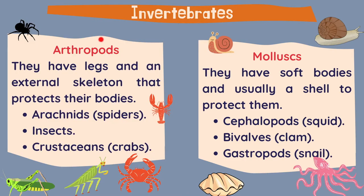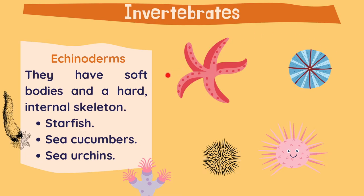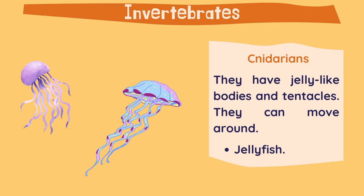Now that we know about arthropods and mollusks, let's go to the next groups. Here we have eukinoderms. They have soft bodies and a hard internal skeleton. In this group, we can find starfish, sea cucumber, and sea urchins. Nidarians, like eukinoderms, live underwater.